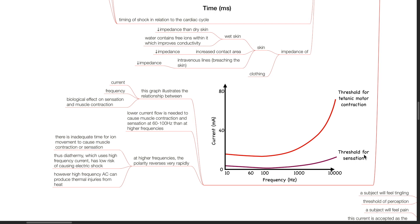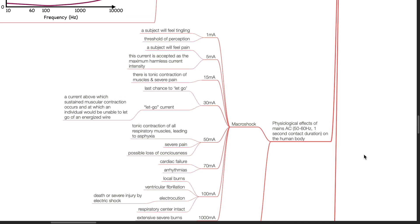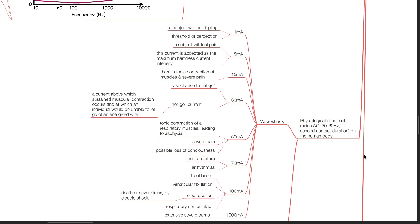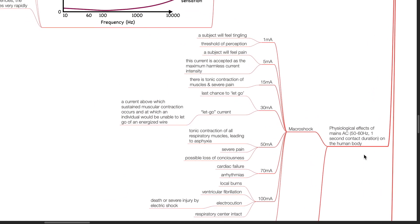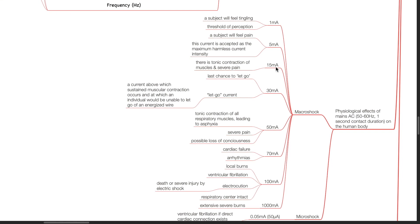Physical effects of mains AC 50 to 60 Hz at 1 second contact duration on the human body. This can result in macroshock and microshock. For macroshock, at 1 mA the subject will feel tingling. This is the threshold for perception. At 5 mA a subject will feel pain. This is the current accepted as the maximum harmless current intensity. At 15 mA, there is tonic contraction of muscles and severe pain.